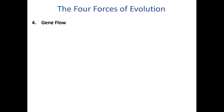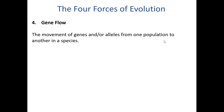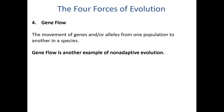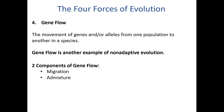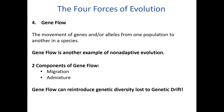Next we have gene flow, which describes the movement of genes and alleles from one population to another within the species — another example of non-adaptive evolution. There are basically two components of gene flow: migration and admixture. When two separate populations of the same species come together due to migration or another process, you get admixture of the genes within the two populations. Gene flow in that way can actually reintroduce some of the genetic diversity that's lost to genetic drift.